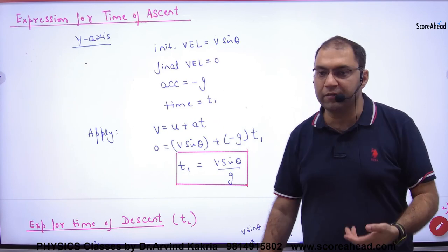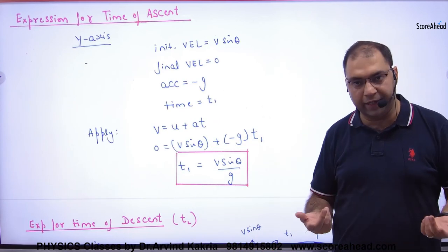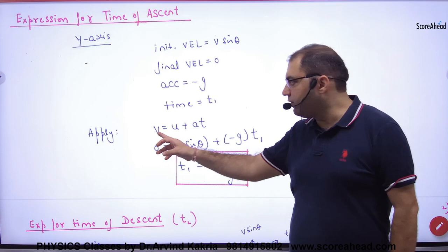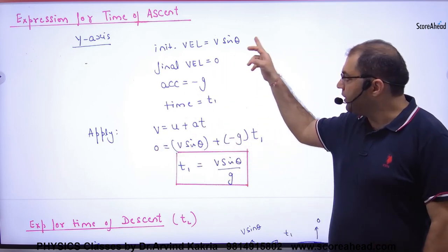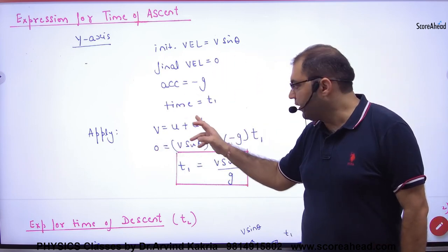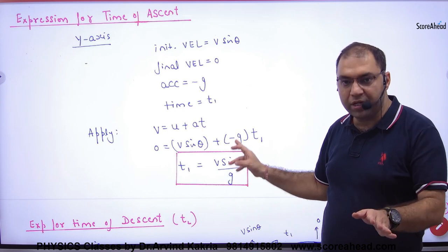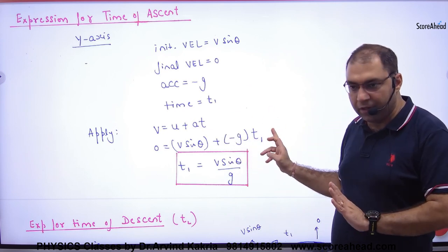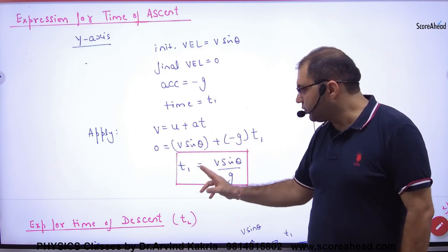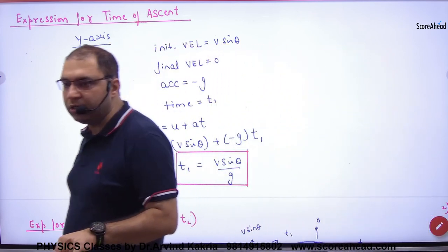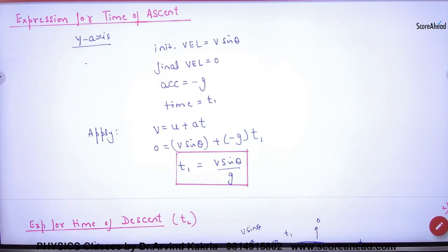Apply the equation v equals u plus at. When we apply in y axis, final velocity is 0, initial velocity is v sin theta, and acceleration is minus g, time is t1. Solving this, the time of ascent is t1 equals v sin theta upon g. This formula you have to remember.